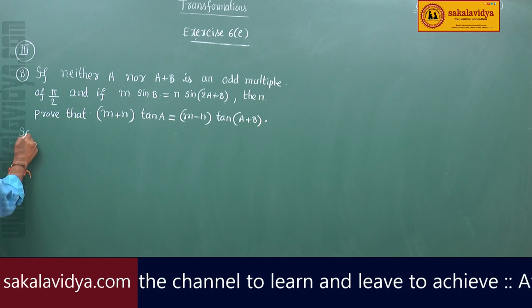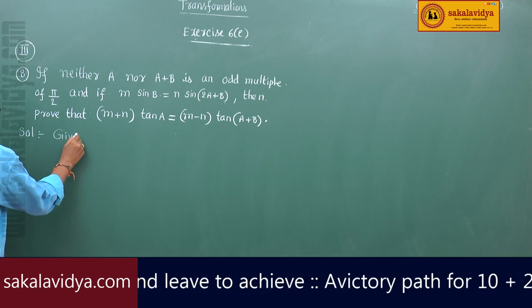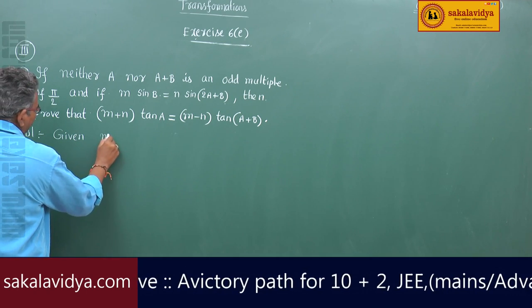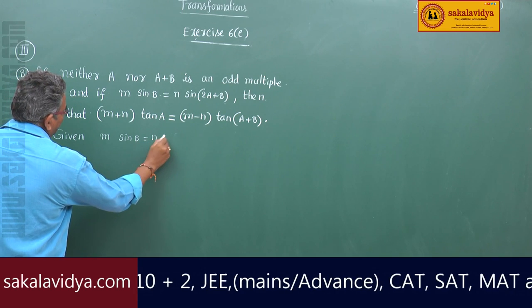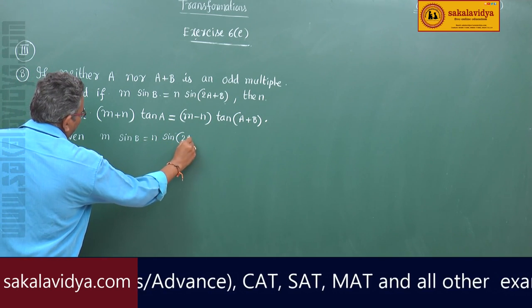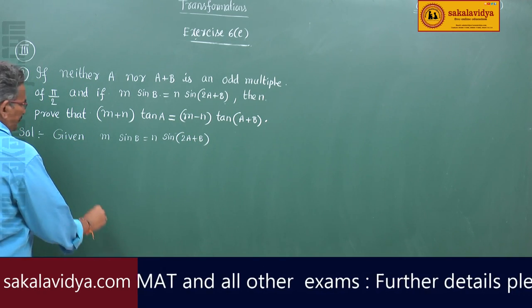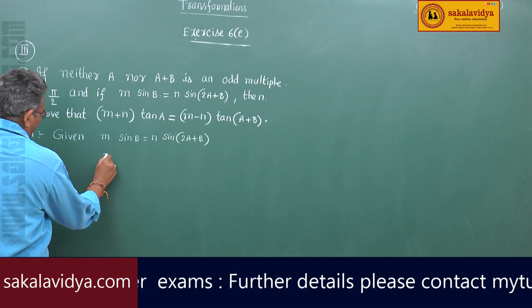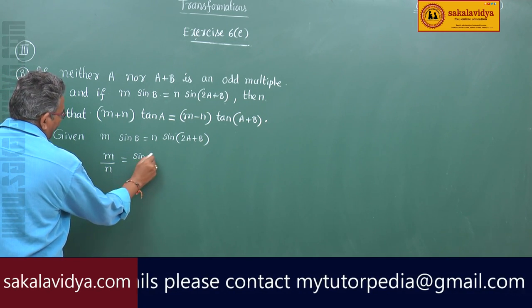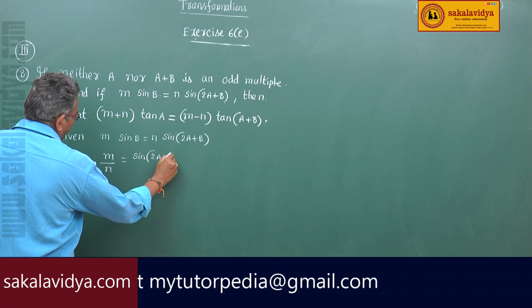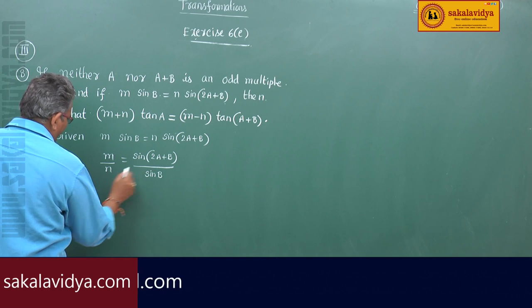Given m·sin(B) equal to n·sin(2A+B), this can be written as m by n is equal to sin(2A+B) by sin(B). Now apply Componendo-Dividendo rule.